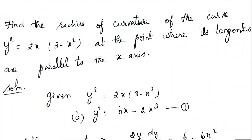Find the radius of curvature of the curve y² = 2x(3 - x²) at the point where its tangents are parallel to the x-axis.